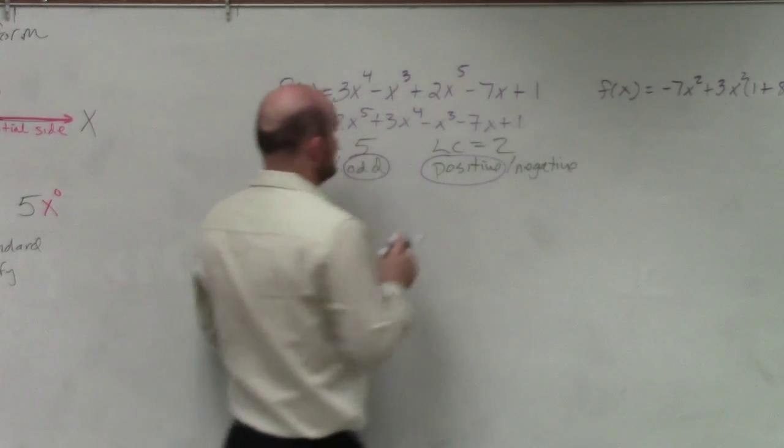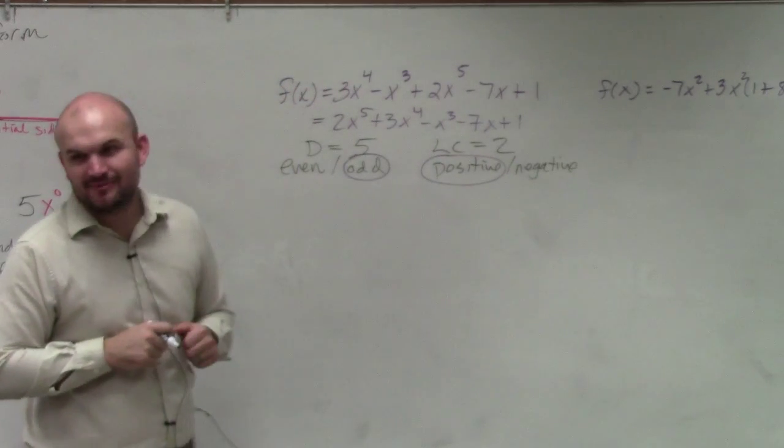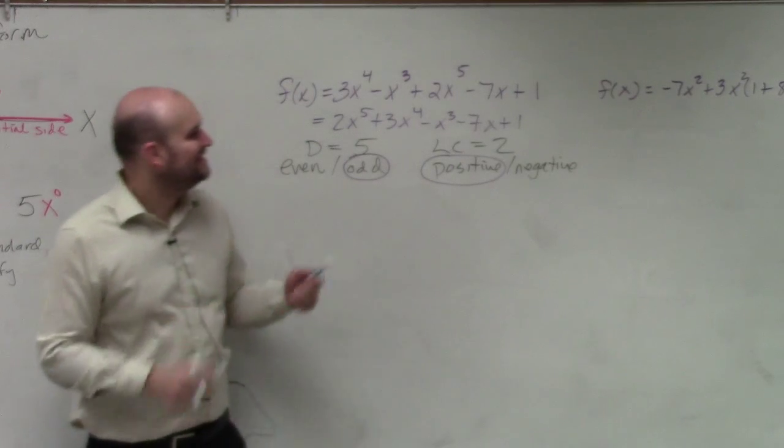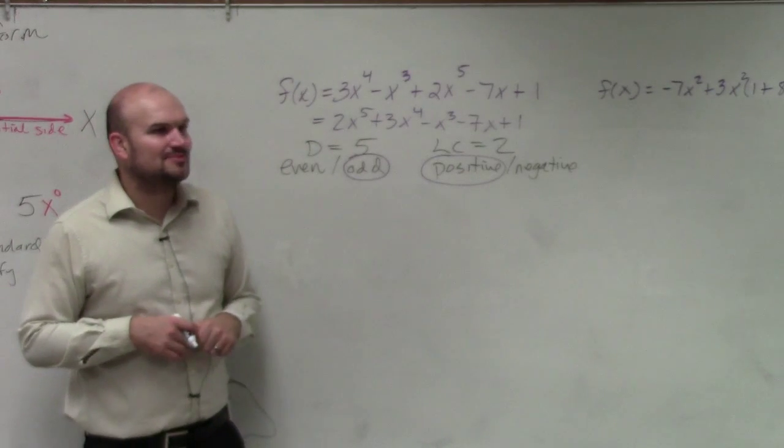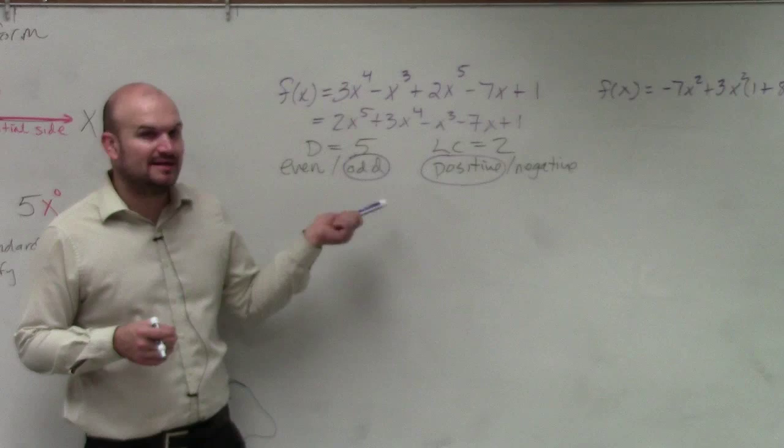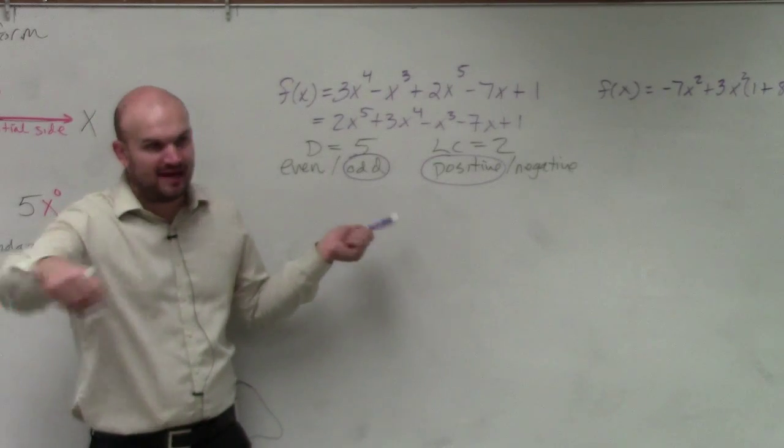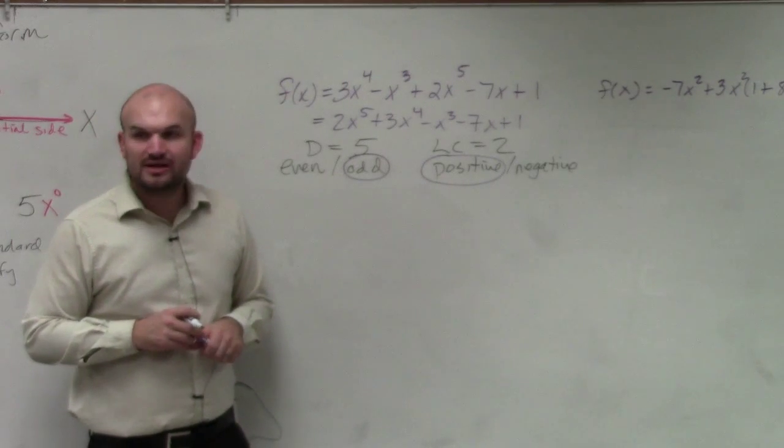So let's go ahead. Oh, did I do the same one? Yeah. Dang it. So let's go ahead and take a look at this one. If you have an odd and positive on your little end behavior chart, where does that, what does that do?